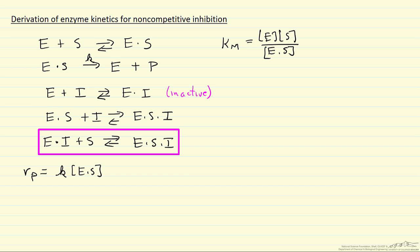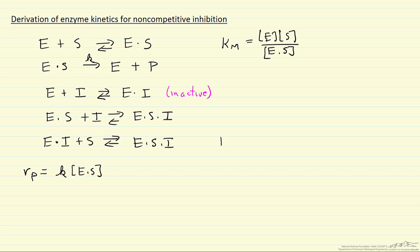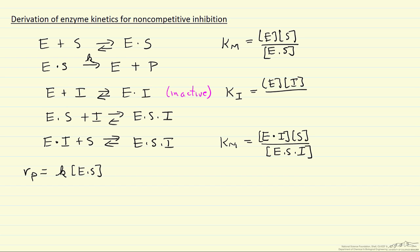We're going to assume that for the substrate reacting with the enzyme-inhibitor complex, it has the same dissociation constant as the substrate reacting with just the enzyme. In other words, the binding of the inhibitor does not affect the equilibrium for the binding of the substrate. Similarly, we write a dissociation constant for the inhibitor reacting with the enzyme, and we assume the same dissociation constant Ki for the inhibitor reacting with the enzyme-substrate complex — the idea being that whether the inhibitor binds the free enzyme or the enzyme-substrate complex, the dissociation constant is the same.